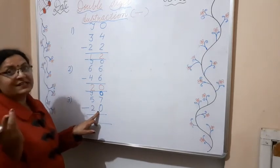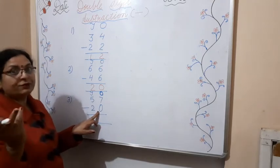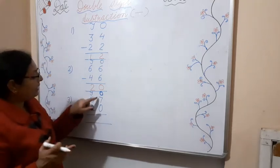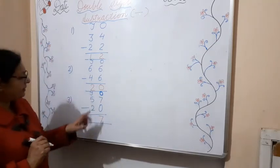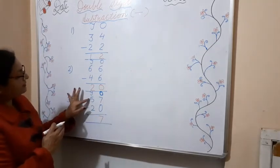As you know, 0 has no value. So we don't need to subtract any number. The answer will be the same: 7. Did you understand?